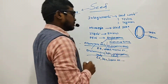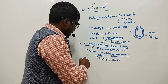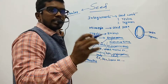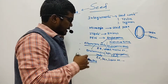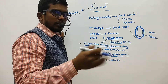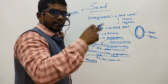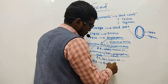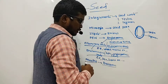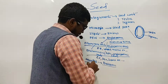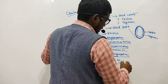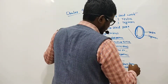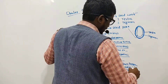Another important structure is the nucellus, regarded as the megasporangium proper in the ovule. It is generally utilized by the developing embryo, but in certain cases a thin layer remains around the endosperm, called the perisperm or persistent nucellus. Examples include black pepper, water lily, and castor.